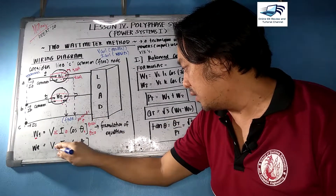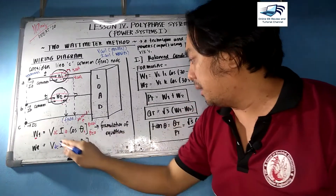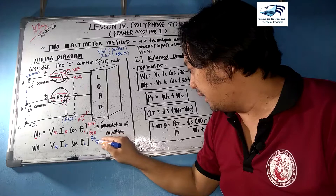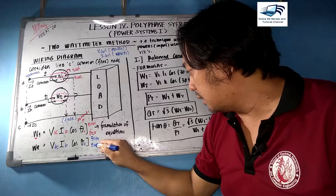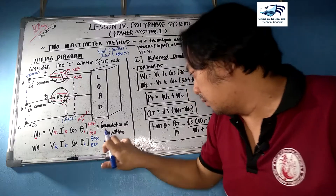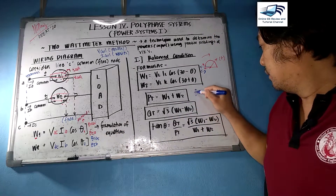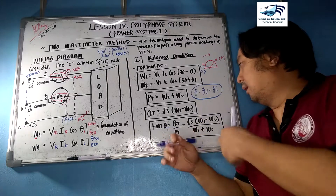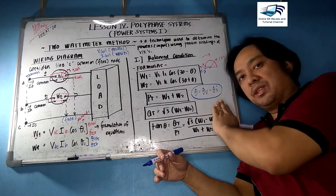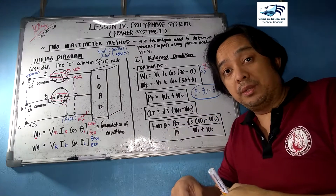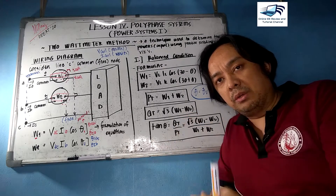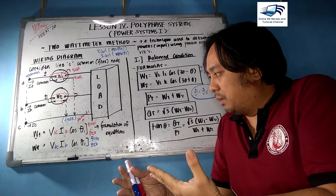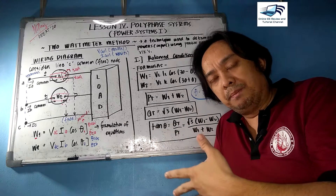Similarly, for wattmeter 2, the voltage coil is connected from B to C, so the voltage is VBC and the current is IB. Theta 2 depends on the angle of VBC minus the angle of IB. Please take note that the angle theta is the difference between the voltage and current angles, since we are dealing with phasors.